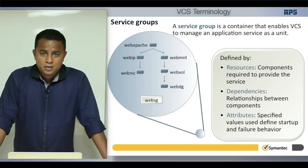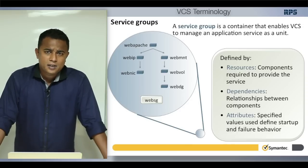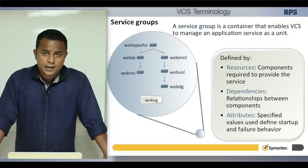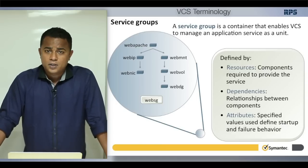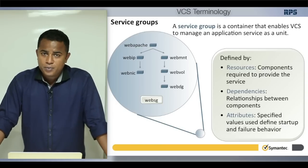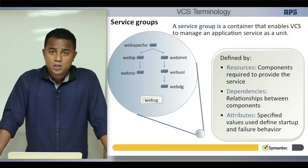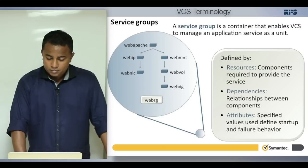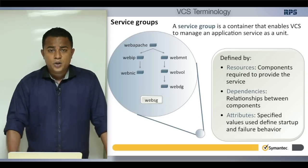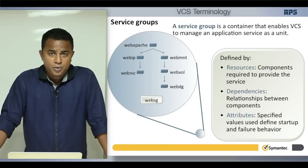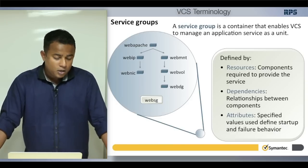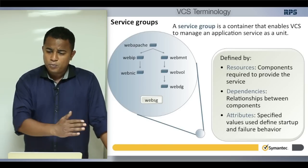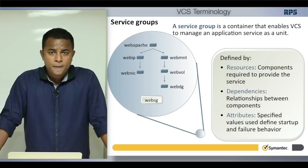Next is the service group. A service group is basically a container which holds all the resources associated with providing a service. That could be a hardware component or a software component — the collection of all resources required to provide the service. There are three things to know: resources, dependencies, and attributes. Resources are the components that make up a service group.